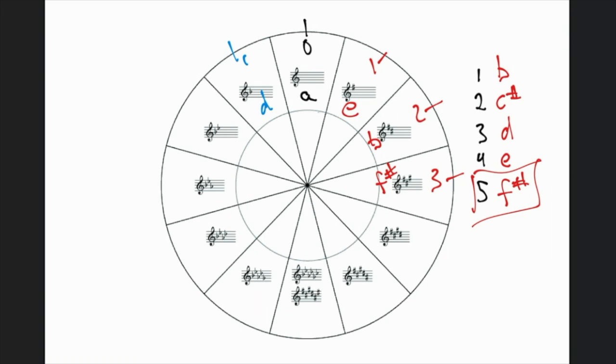Position one for the minors is D minor. D minor has one flat, B flat, and it's related to F major.